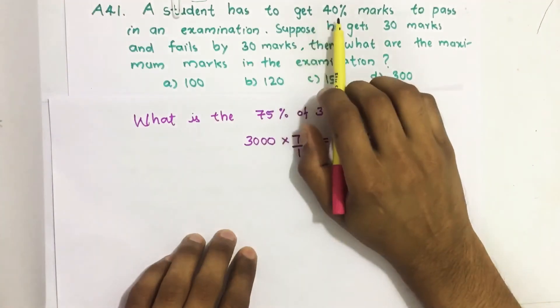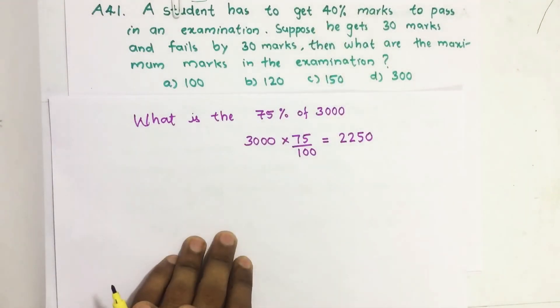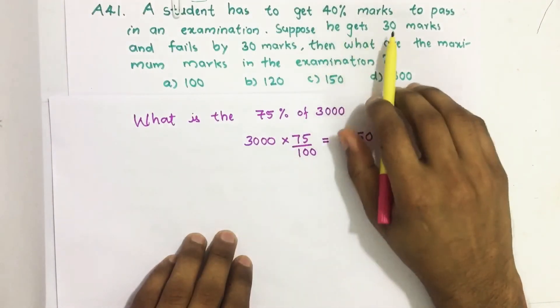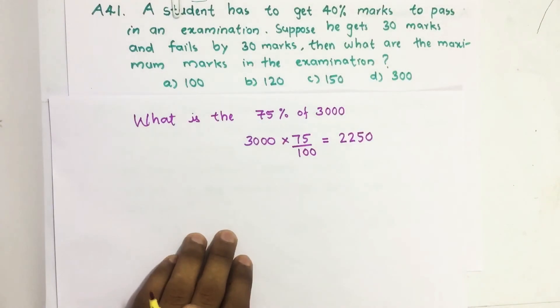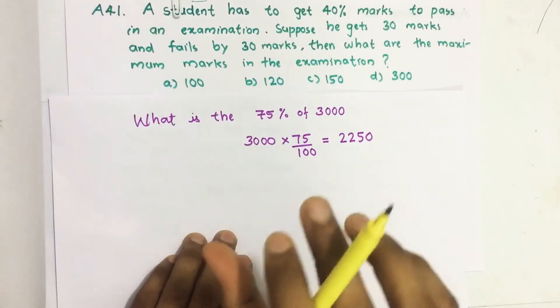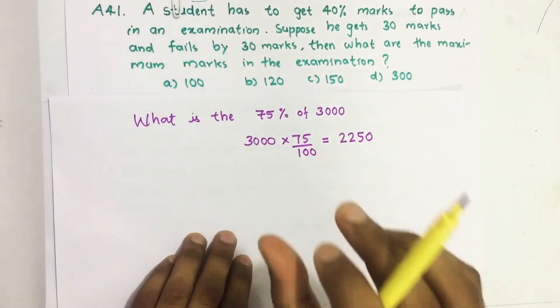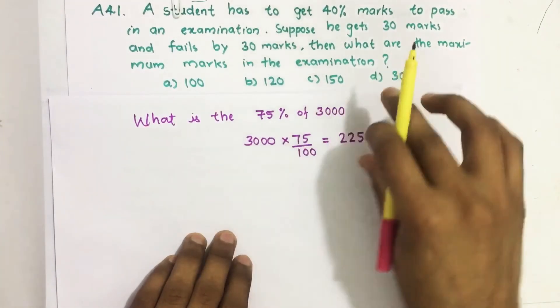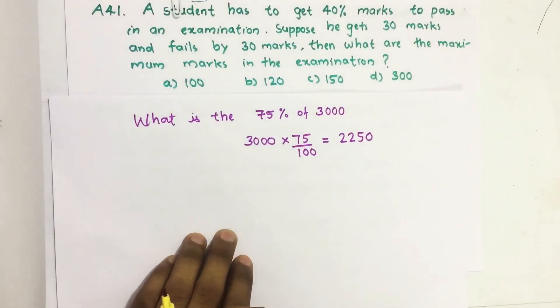So here 40 percentage is the pass percentage and if the student got 30 marks he fails by 30 marks. That means if he gets 30 more marks, that is total 60 marks, he would have passed the examination.